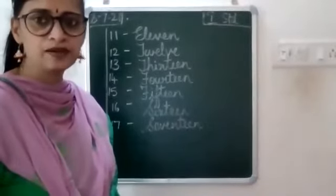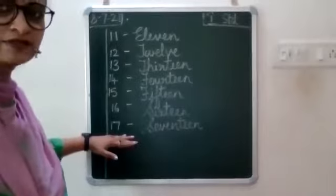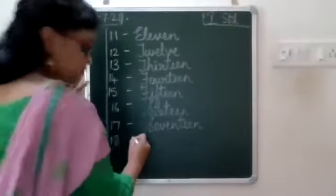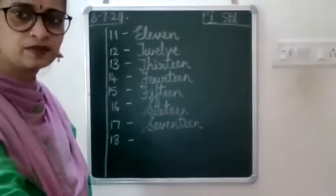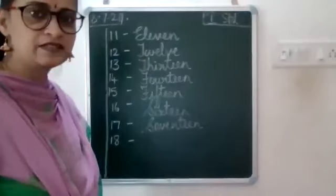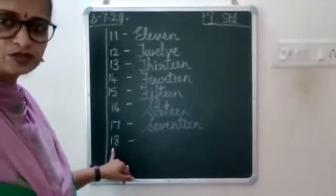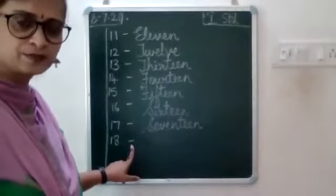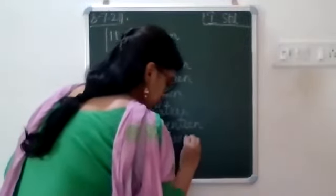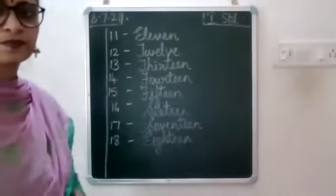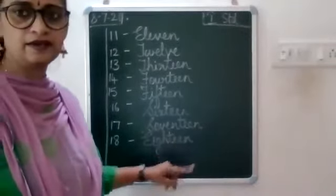Let us give time for the others also to write. Now next, after you have written 17, leave a line, write 18. Leave a finger space, put a small dash, then leave one finger space, write capital E-I-G-H-T-E-E-N, 18.